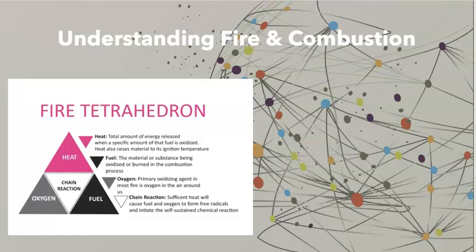We call that chain reaction that we've added to the tetrahedron image to help us understand that there's got to be that sufficient heat which causes the fuel and the oxygen to form free radicals and initiate that self-sustained chemical reaction.